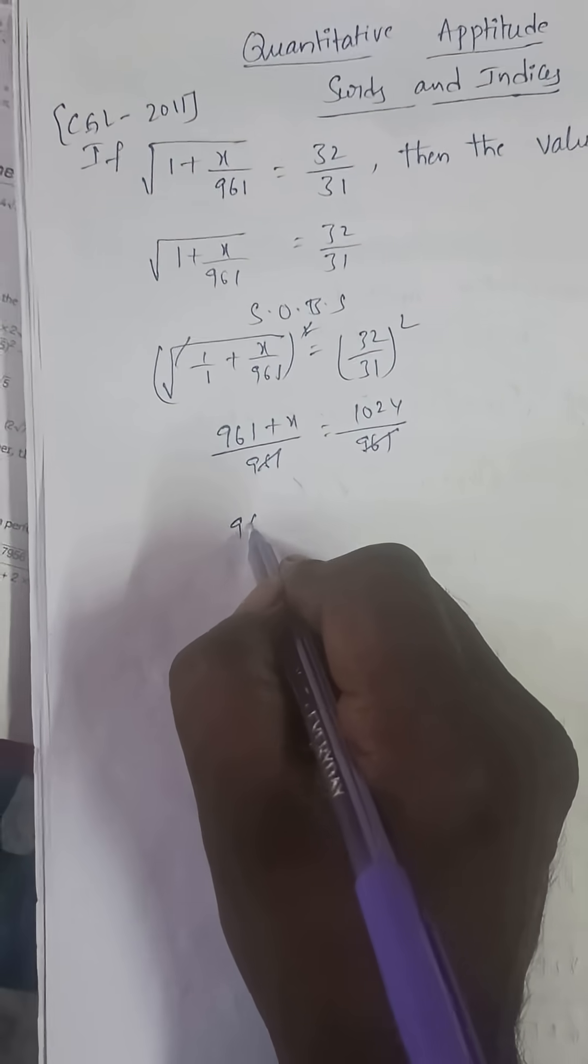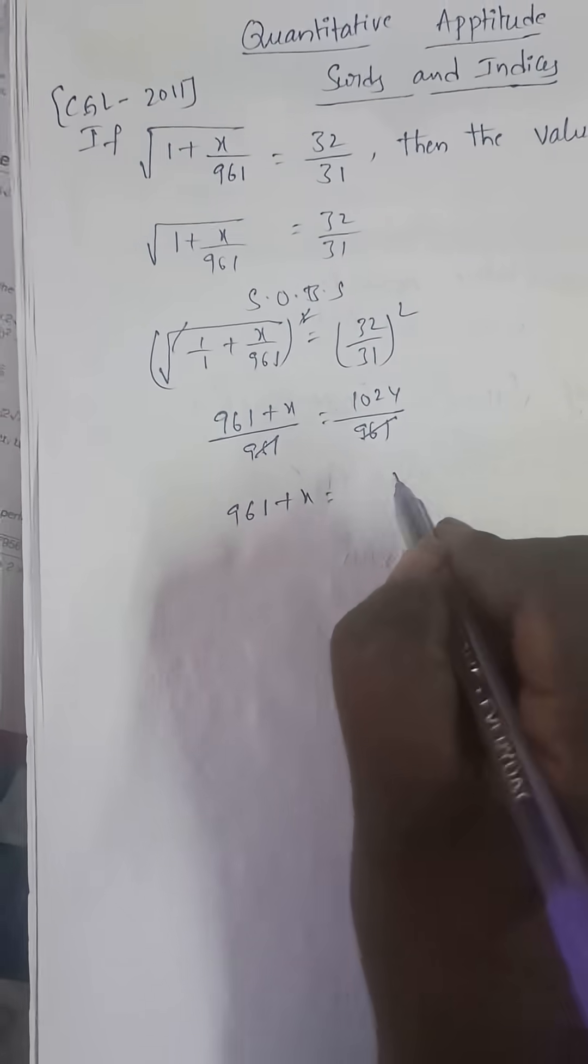961 and 961 cancel. So, 961 plus x is equal to 1024.